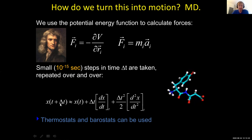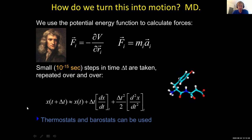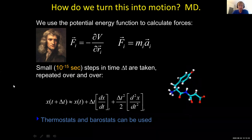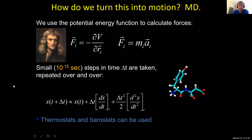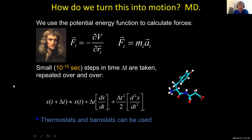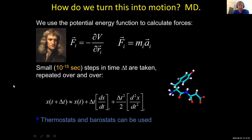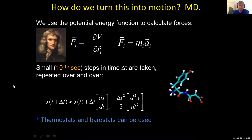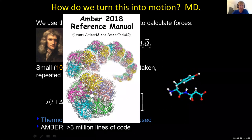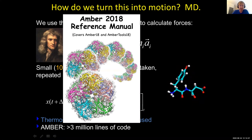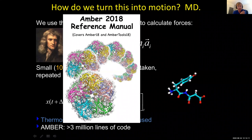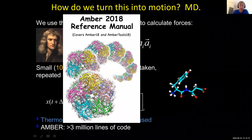On top of the basic integration, we add thermostats to run at constant temperature, barostats for constant pressure, and many other things. We can add new terms to the energy function — for example, a pulling force on part of your molecule to see how it responds, or a spring to tack an atom down in space. The program we helped develop in my lab is called AMBER. We have AMBER 2020 with yearly updates; six different labs use it. It's one of the most popular programs for doing simulations of biomolecules.